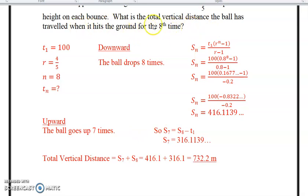If we were looking for the total vertical distance the ball has traveled when it hits the ground for the eighth time, we would just subtract the first off because the sum of the eight, the only difference is going to be that first fall of 100 meters which only occurs for the downward, once that doesn't happen upward.